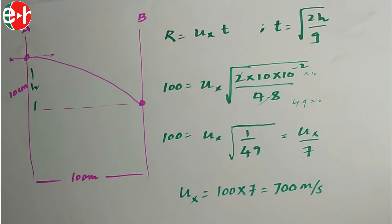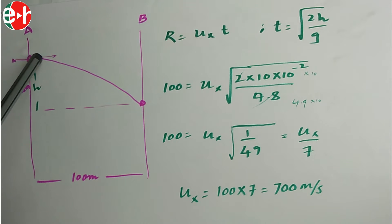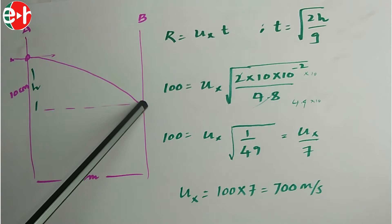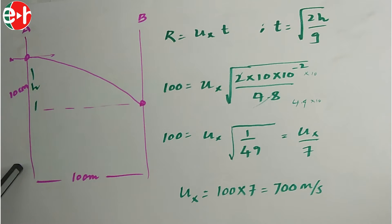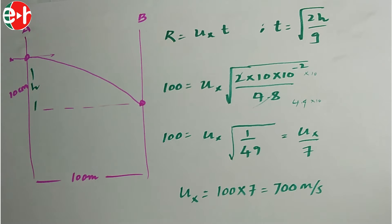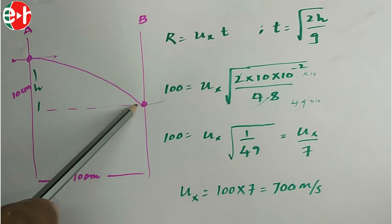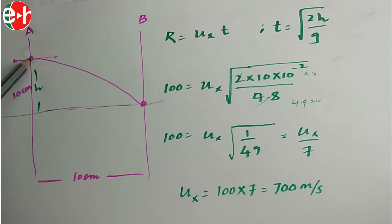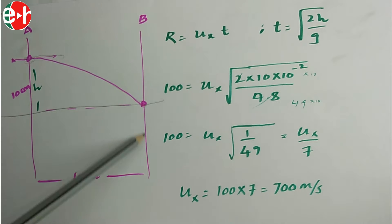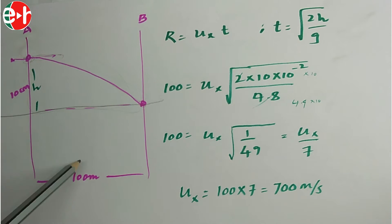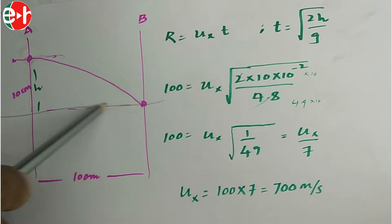There are two paper screens A and B. A bullet pierces through A horizontally and touches screen B 10 centimeters below, with the two screens separated by 100 meters. This is essentially the same as a horizontal projectile problem — the 10 cm drop acts as our height H, and the 100 m separation acts as our range R.